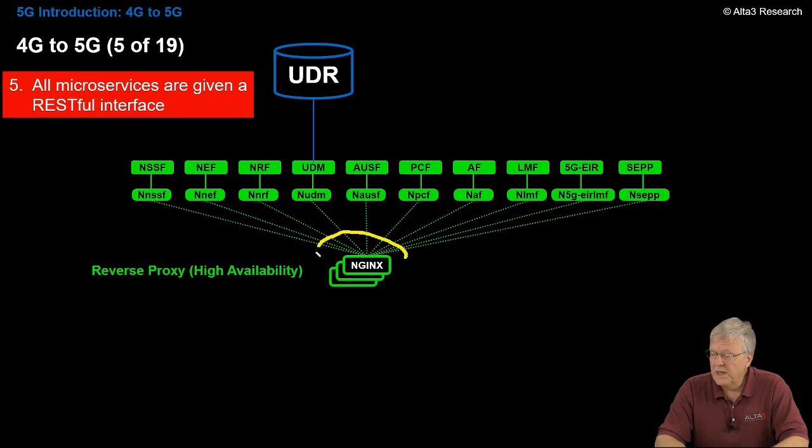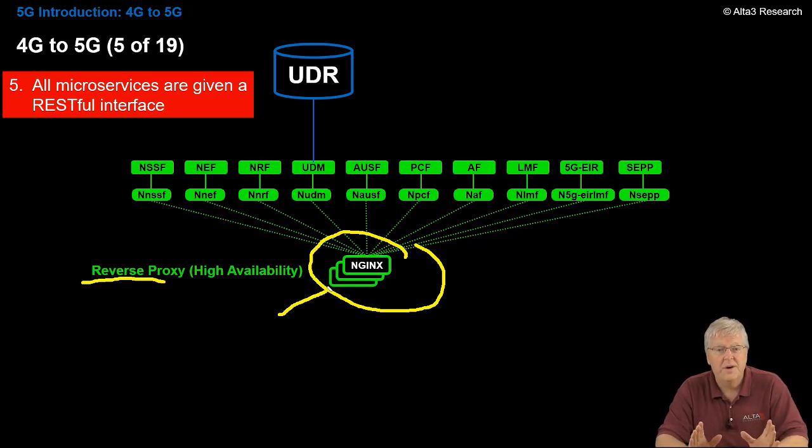Do you remember those diameter relay agents? Well, we're not using diameter. But we need something that would be similar to a relay agent. And there's where a reverse proxy comes in. My favorite reverse proxy by far is NGINX. There are other ones out there as well. I'm running this in high availability. There's going to be three of them. Any one of them fails, the other two will take over.